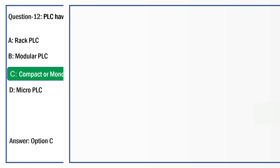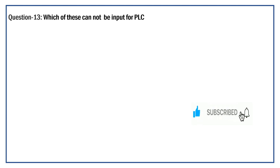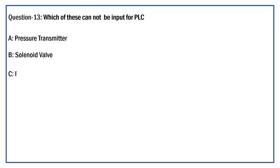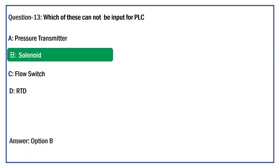Which of the following cannot be an input of a PLC? Option A: Pressure Transmitter. Option B: Solenoid. Option C: Flow Switch. Option D: RTD. The right answer is Option B: Solenoid. Yes, pressure transmitter, flow switch, and RTD can be used as PLC inputs, but a solenoid cannot — it is used as a PLC output device.